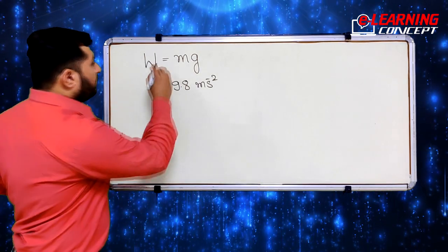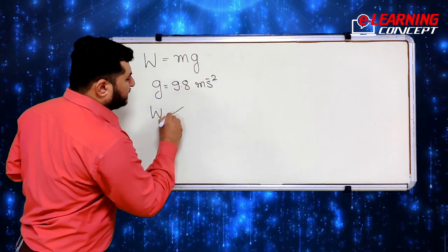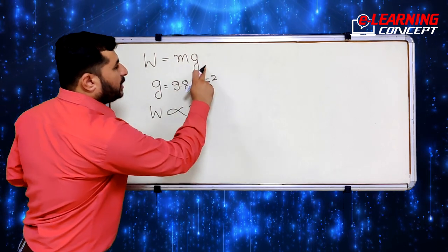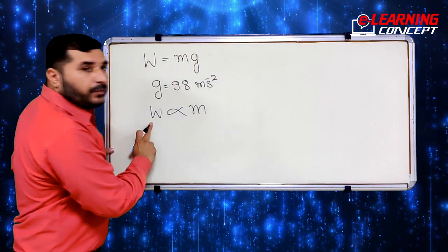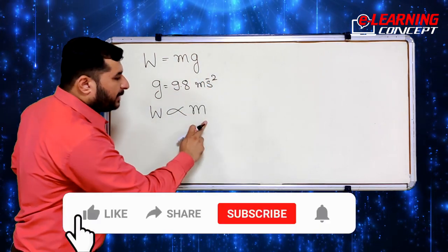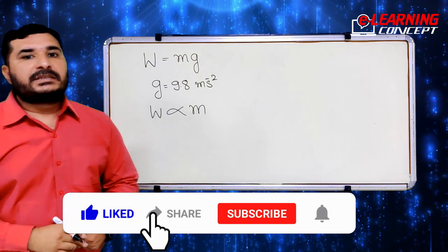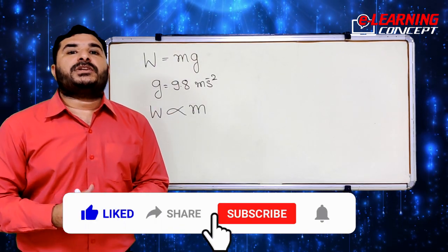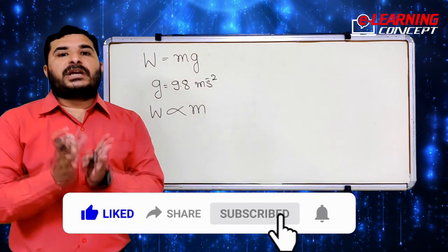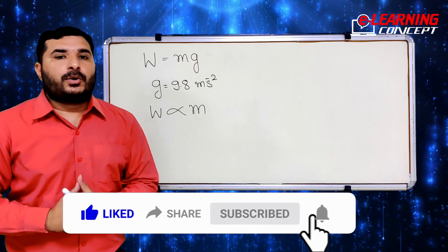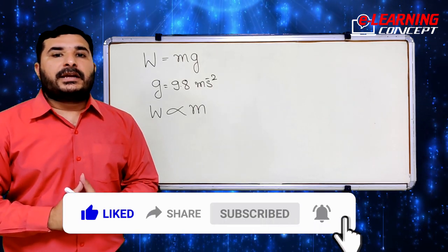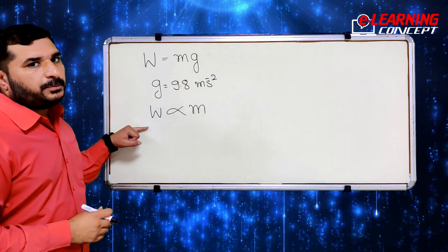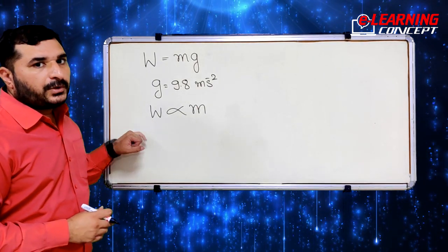Since g is constant, weight depends on the mass of the object. This means that if an object has more mass, its weight will also be more, and if an object has less mass, its weight will also be less.